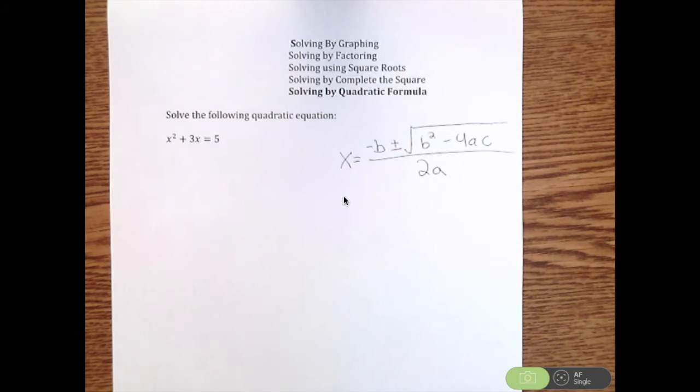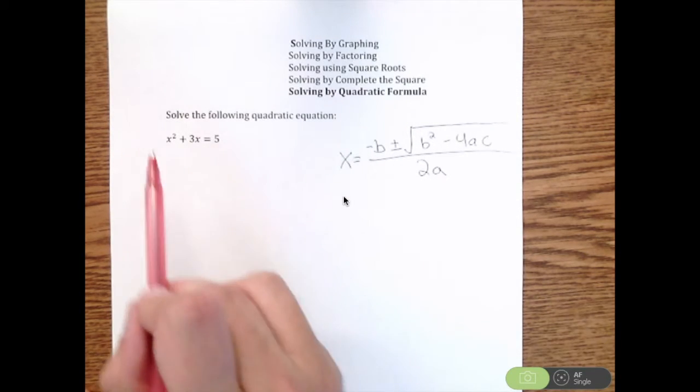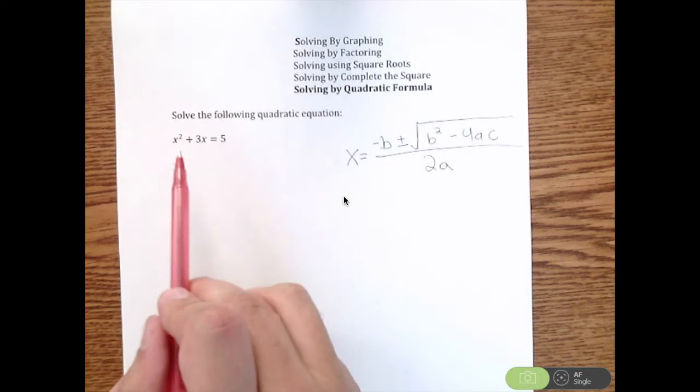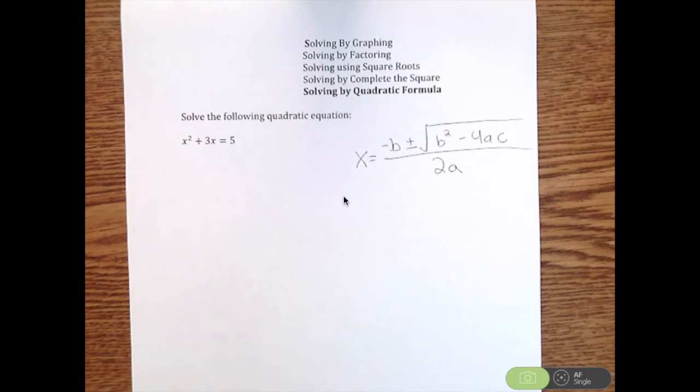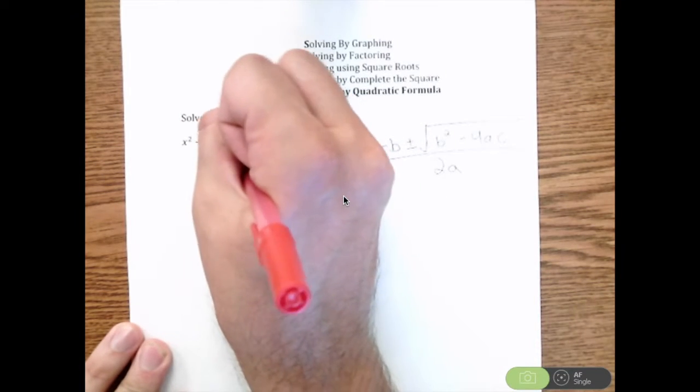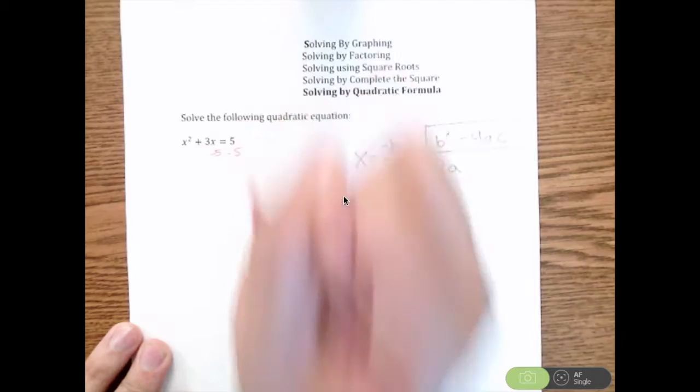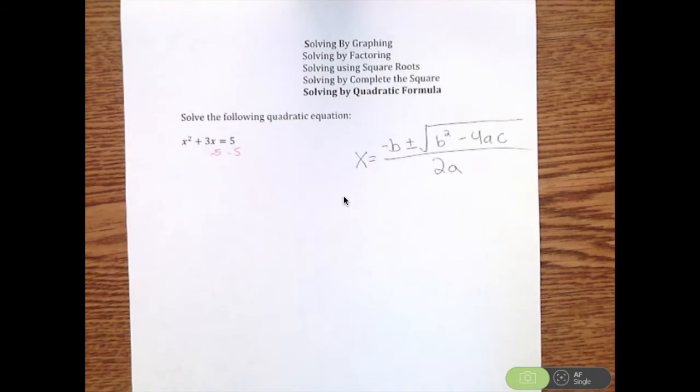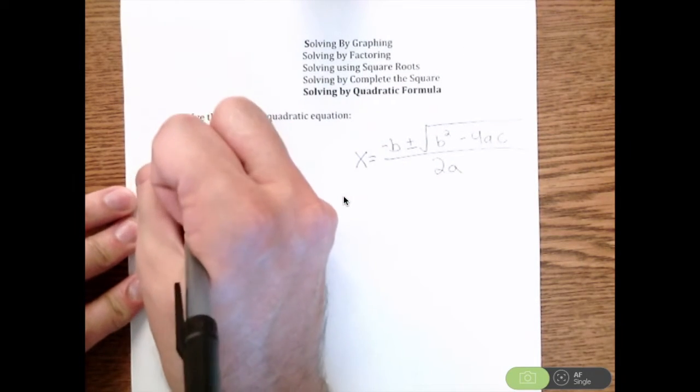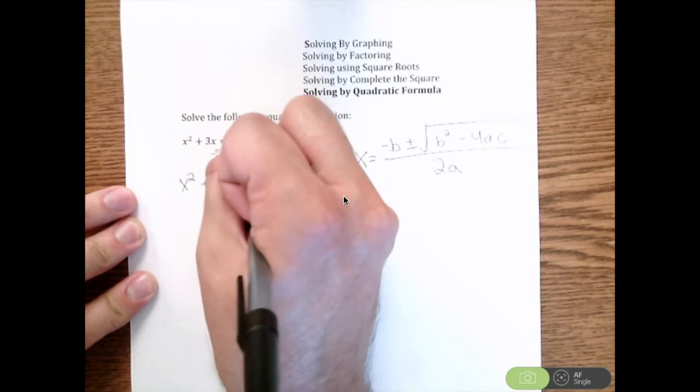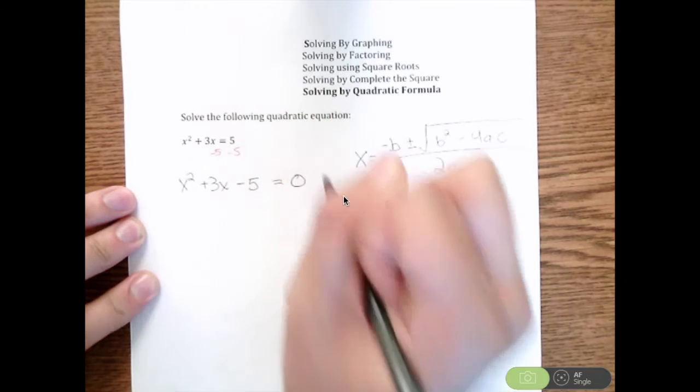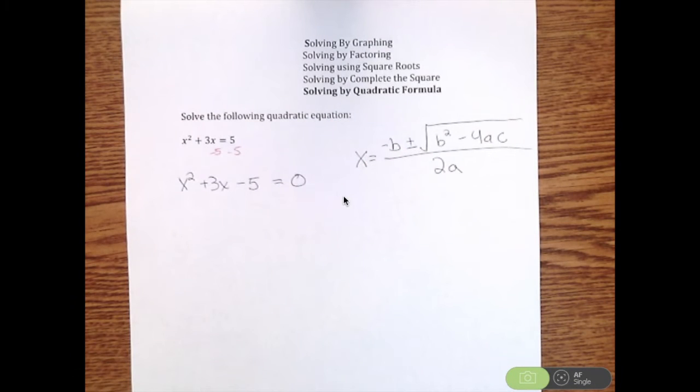As always, the most important thing we need is our quadratic equal to 0. Right now I have x squared plus 3x equal to 5. This is not currently equal to 0, so the first thing I'm going to do is subtract that 5 from both sides so I can get it equal to 0. So that gives me x squared plus 3x minus 5 is equal to 0.